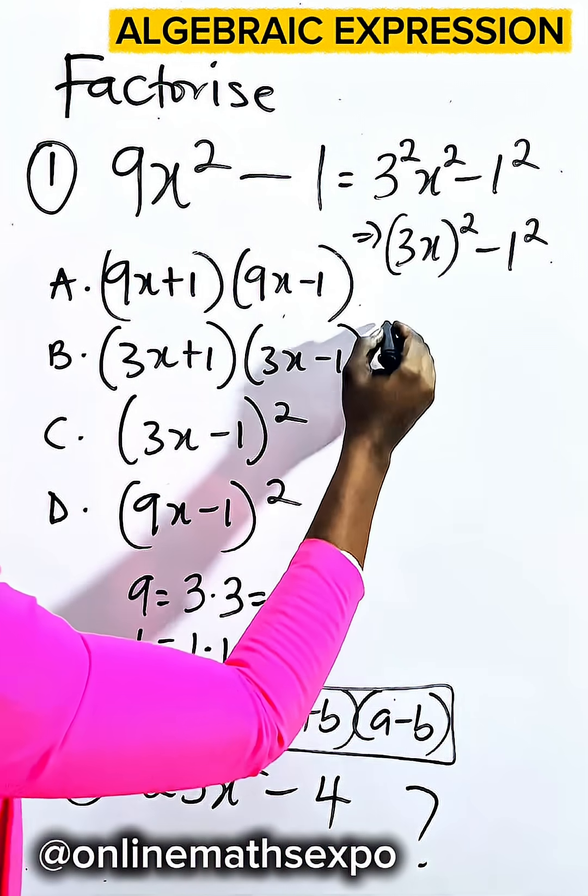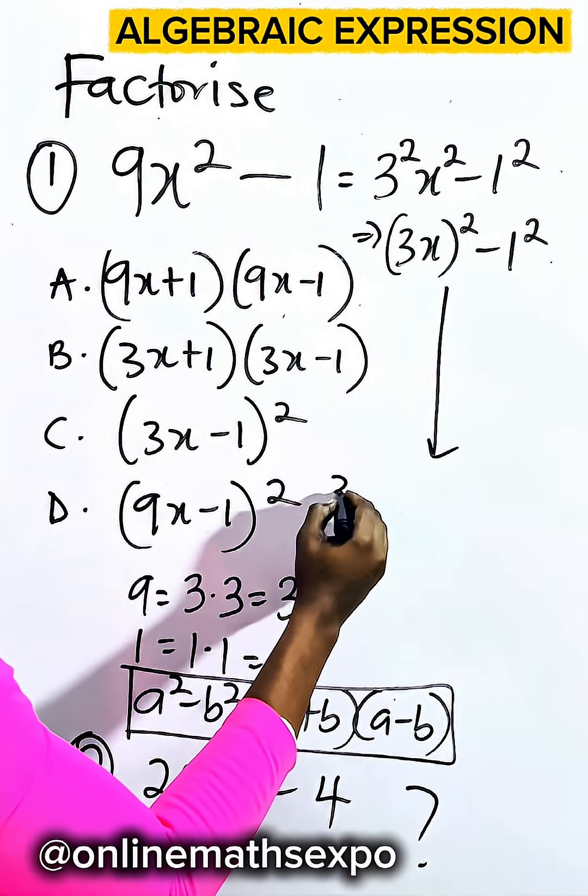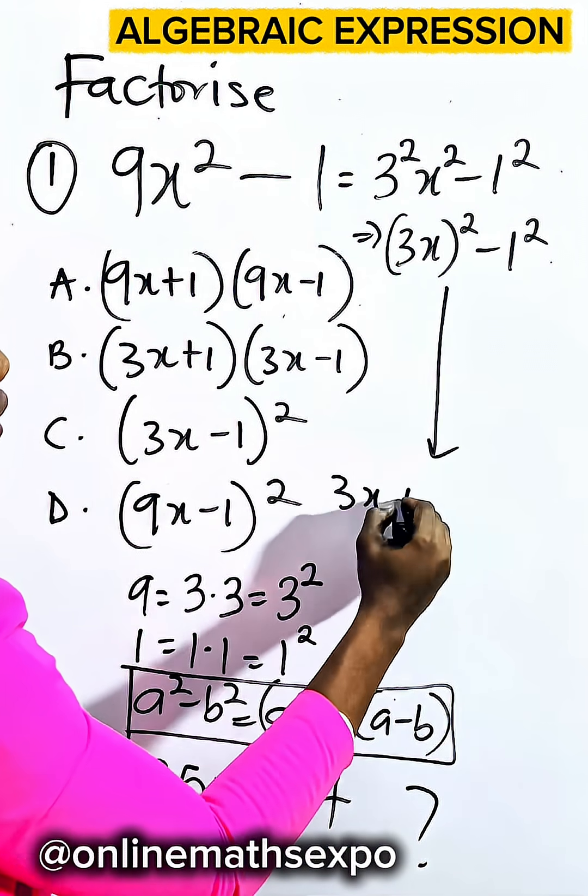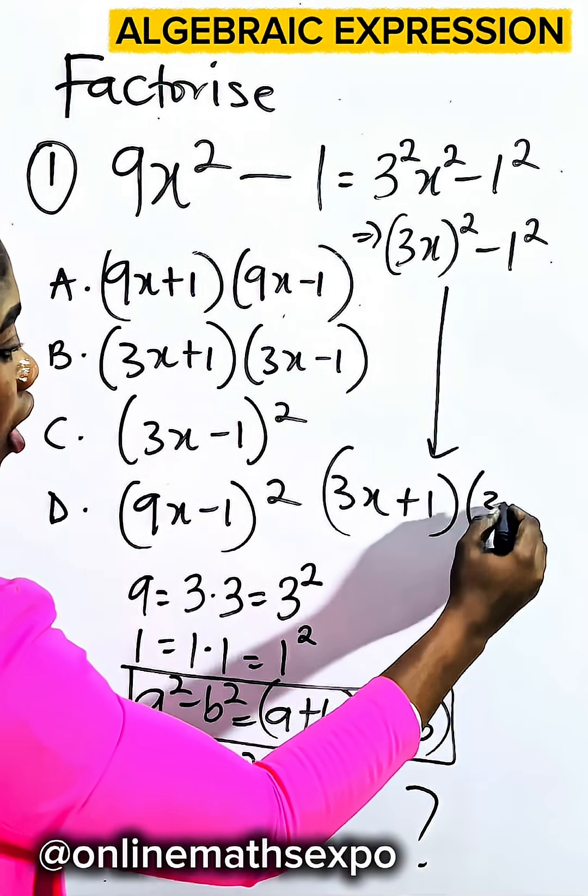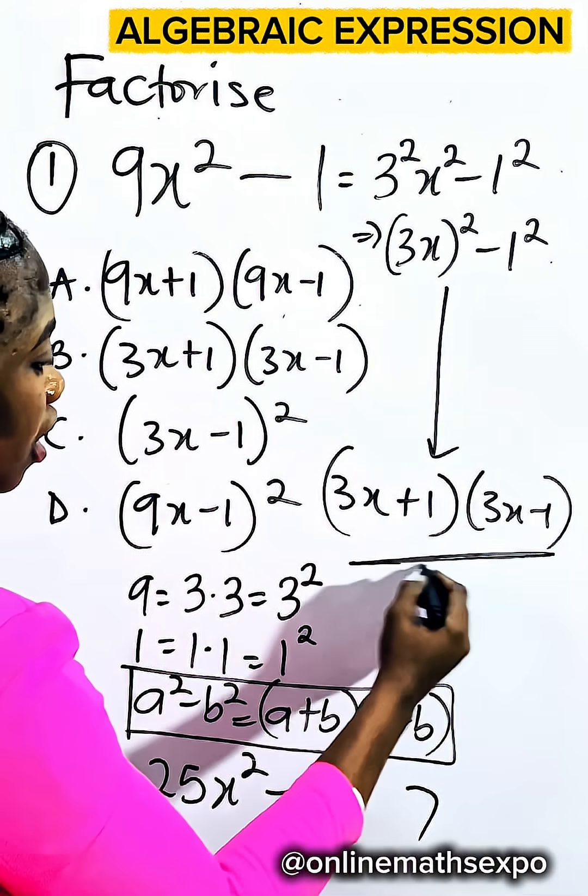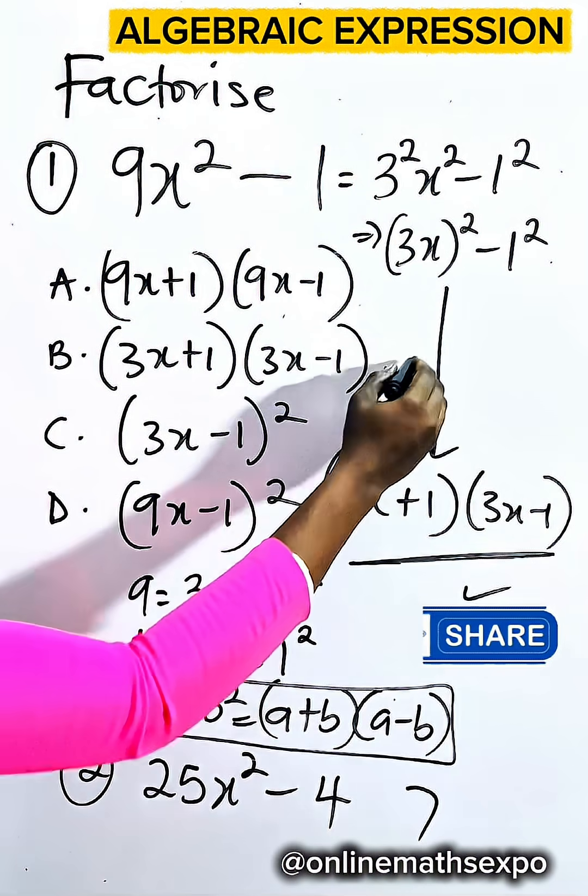So if you apply it here, this is going to give you 3x plus 1 and then 3x minus 1 as our answer. And that is option B.